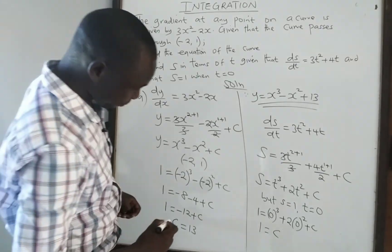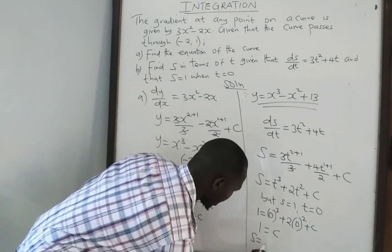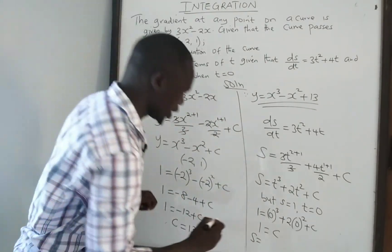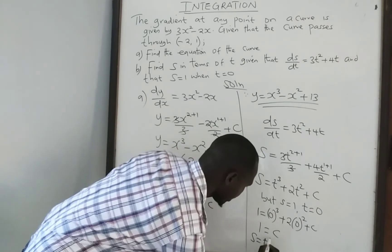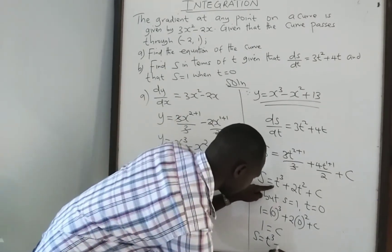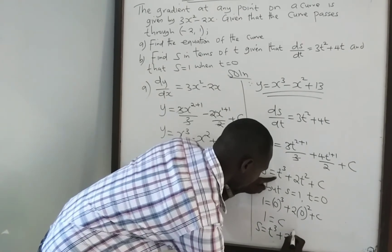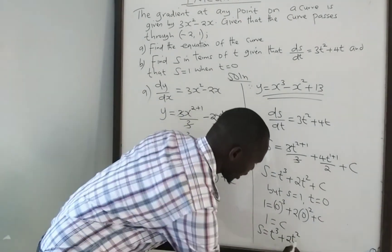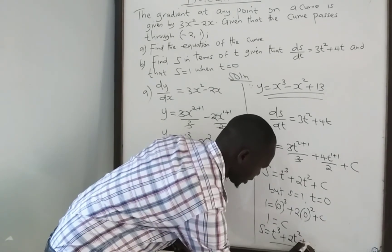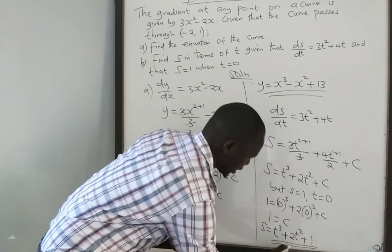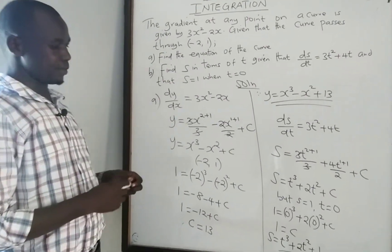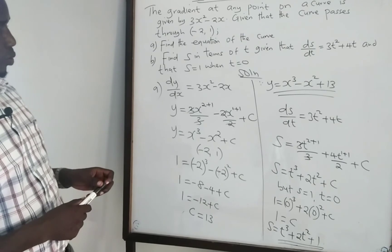Now we can write the specific equation: s equals t cubed plus 2t squared plus 1. That gives us s, the displacement, and that is how this question is done.